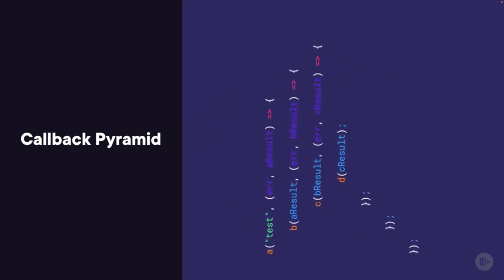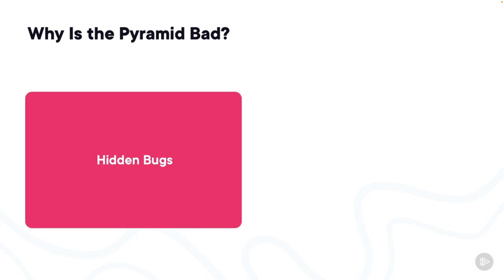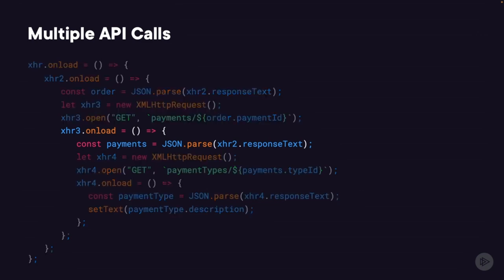If you tilt your head just right, the code looks a bit like a pyramid. But what makes this a pyramid of doom? The first reason is that the pyramid can hide bugs. Revisiting code from earlier with a slight tweak — this time instead of getting two pieces of data from the API it's getting four, each nested inside the previous one. There's a lot going on here, and you still need to process what's happening every time you read it.